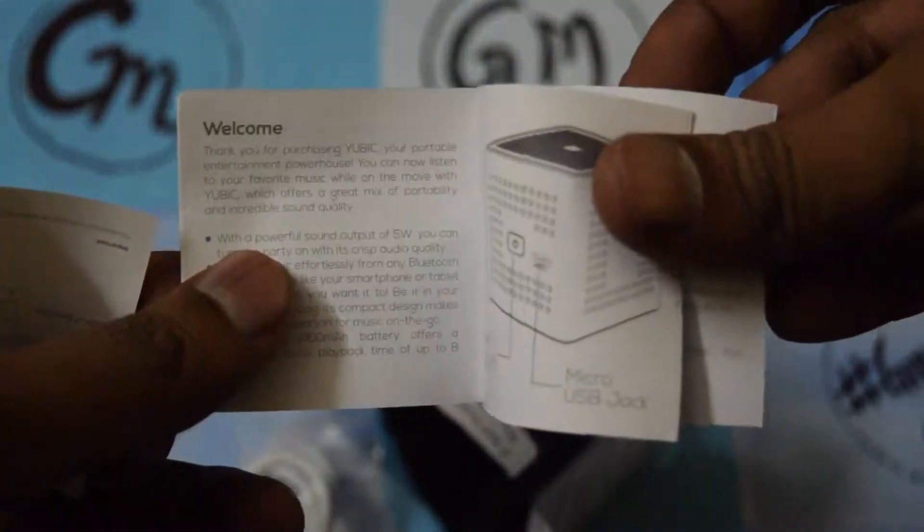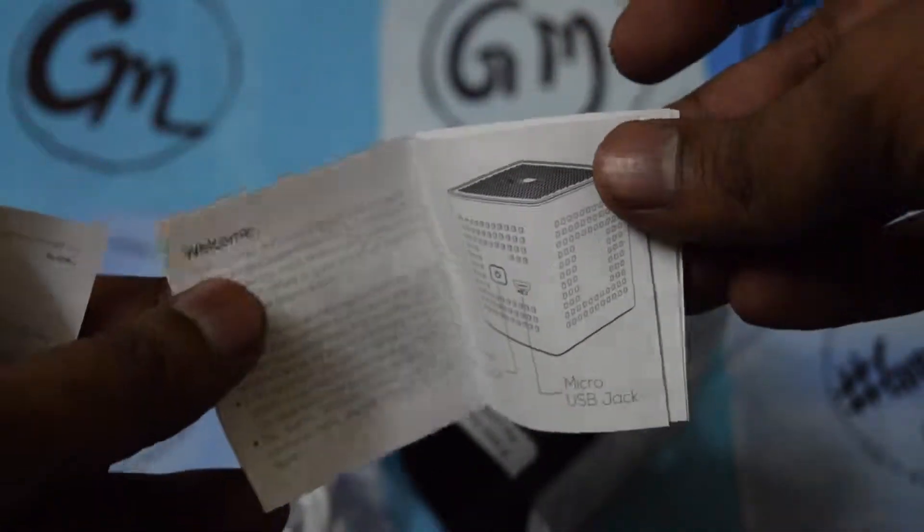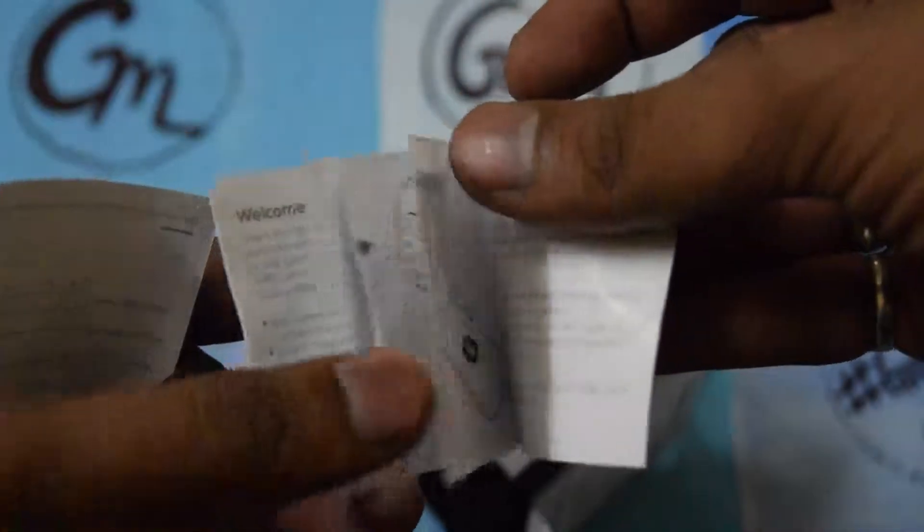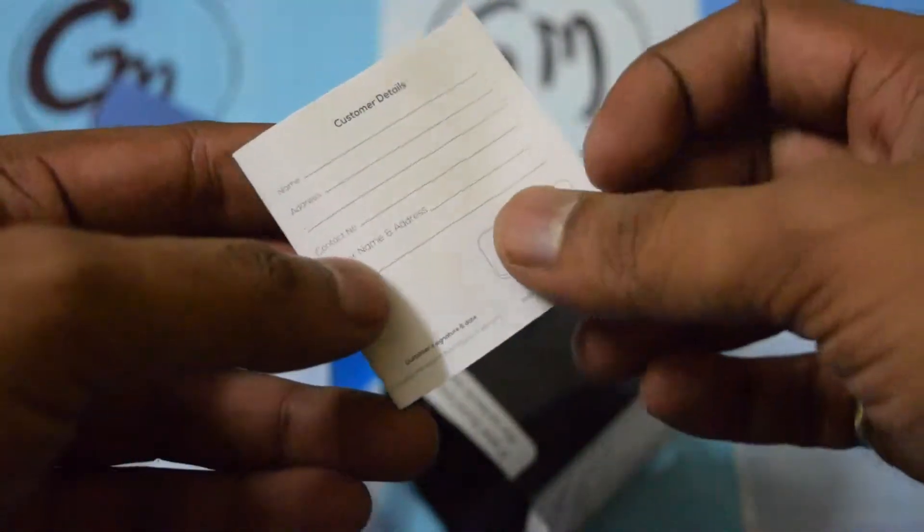This is the user manual. It shows the micro USB charging slot and power cable, and how to connect your smartphone with this one. This is the warranty card and customer data card.